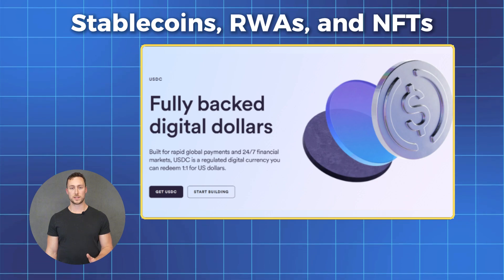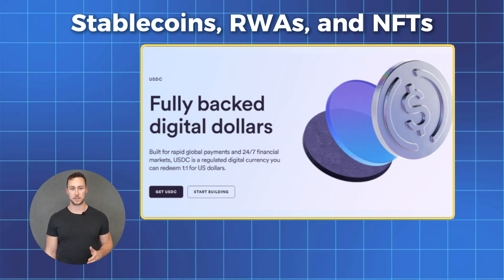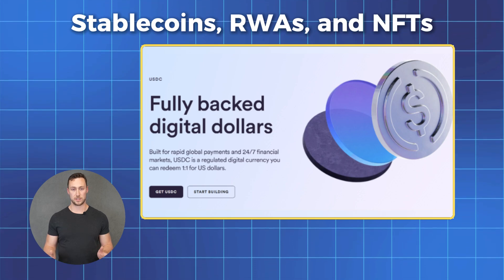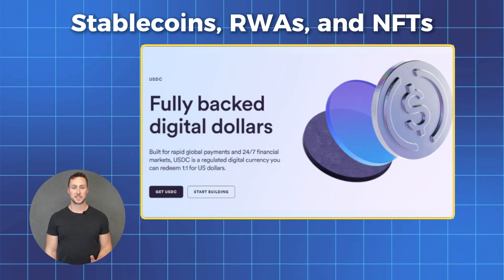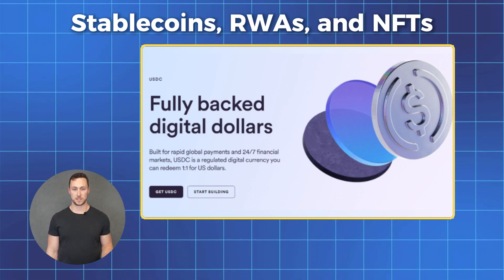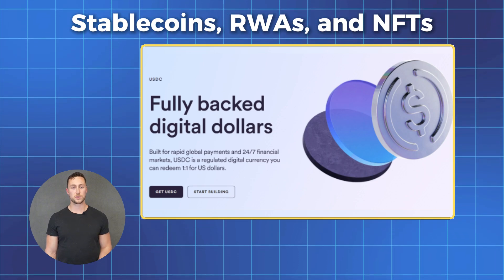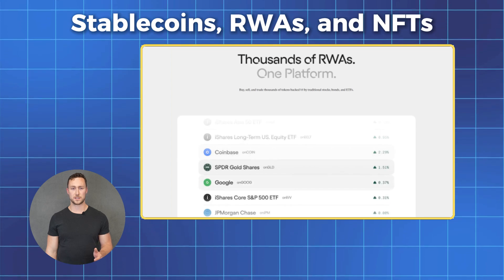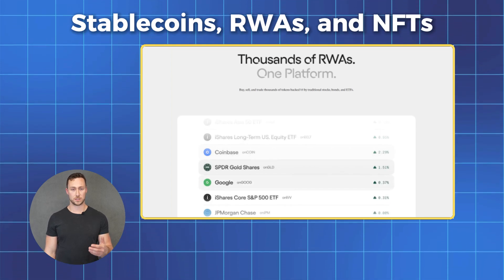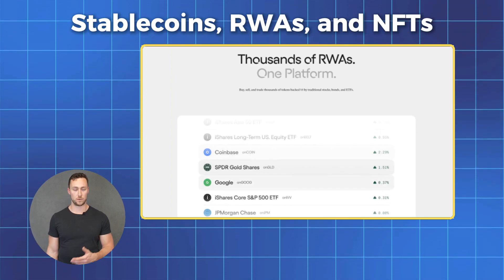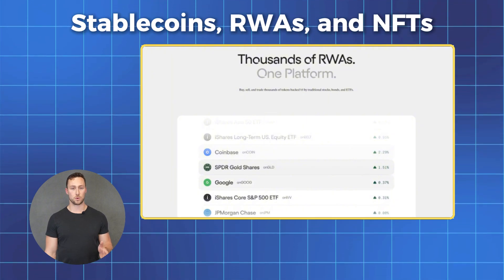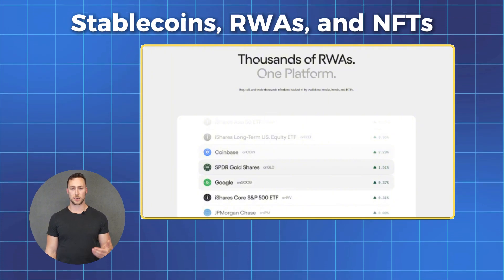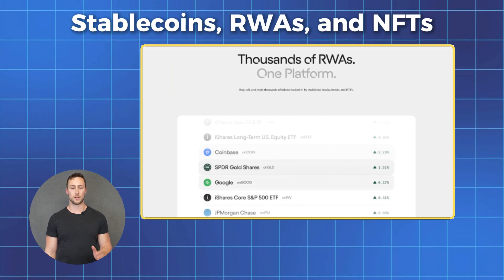Next up, we have stable coins, RWAs or real world assets, and NFTs. We have dedicated videos to each of these, but here's what they are briefly. Stable coins are tokens pegged to real currencies, making them stable for everyday use — these are the closest things to real currency in crypto. RWAs or real world assets are tokens that represent ownership in physical assets outside the digital world, like real estate or stocks. NFTs or non-fungible tokens are unique tokens that can represent digital art, memberships, or other unique items.